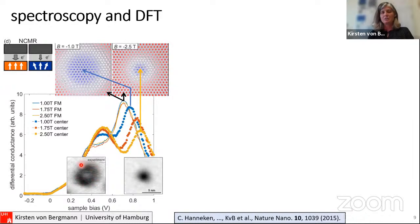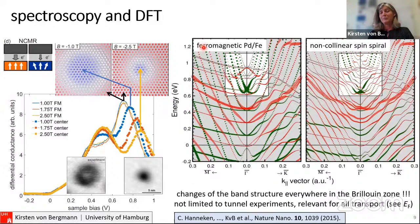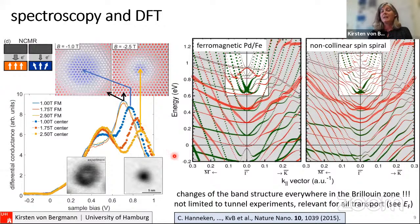The very small skyrmion with strong non-collinearity in the center looks like a dark blob, whereas the larger skyrmion has the highest non-collinearity near the in-plane region, appearing as a ring structure. Our colleagues also performed DFT calculations of the ferromagnetic and non-collinear spin-spiral Pd/Fe system, showing that spin-up and spin-down electronic states differ depending on whether the state is collinear or non-collinear. This difference leads to the observed contrast, enabling imaging of skyrmions with non-magnetic tips, which can be very useful for practical reasons.